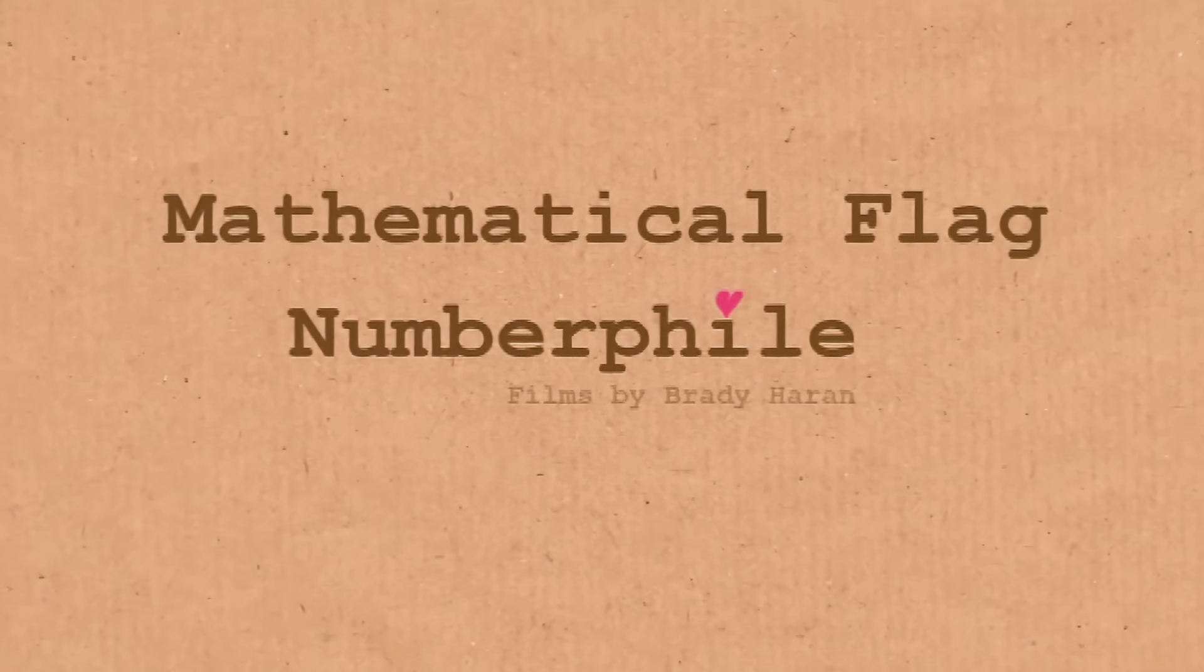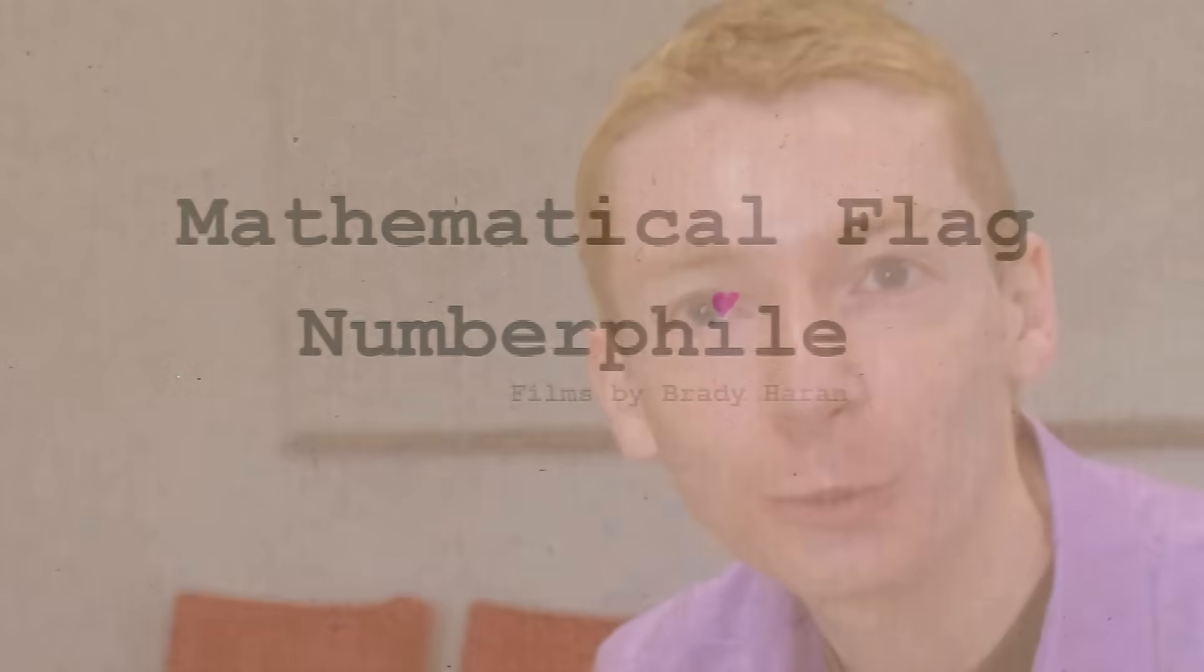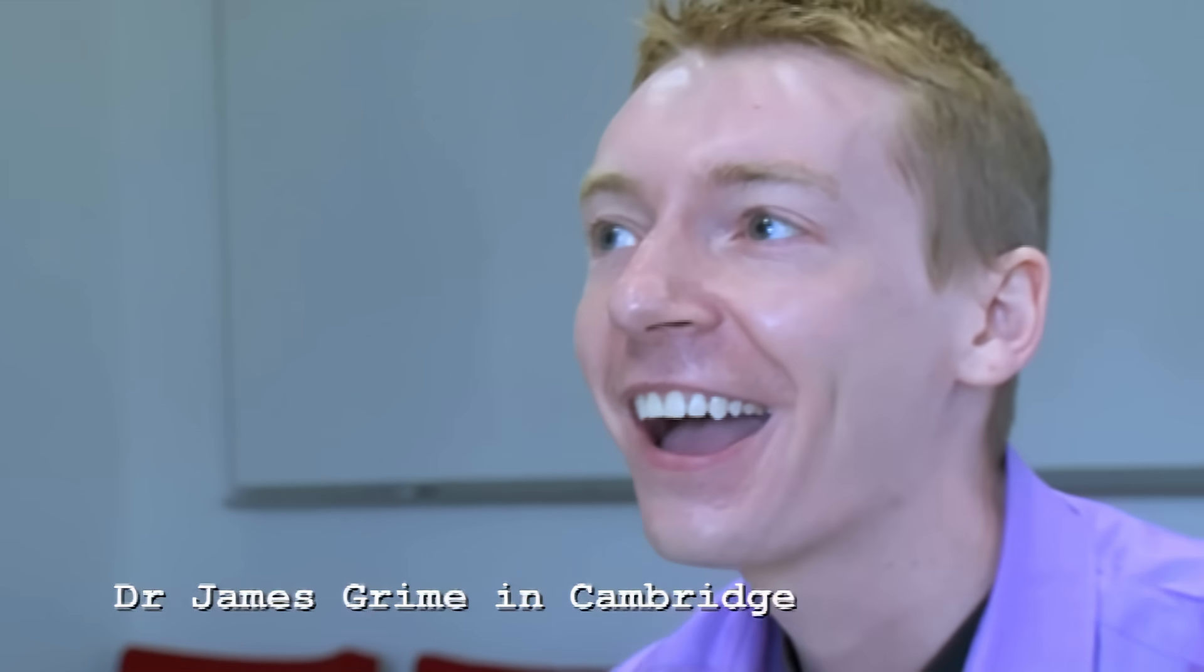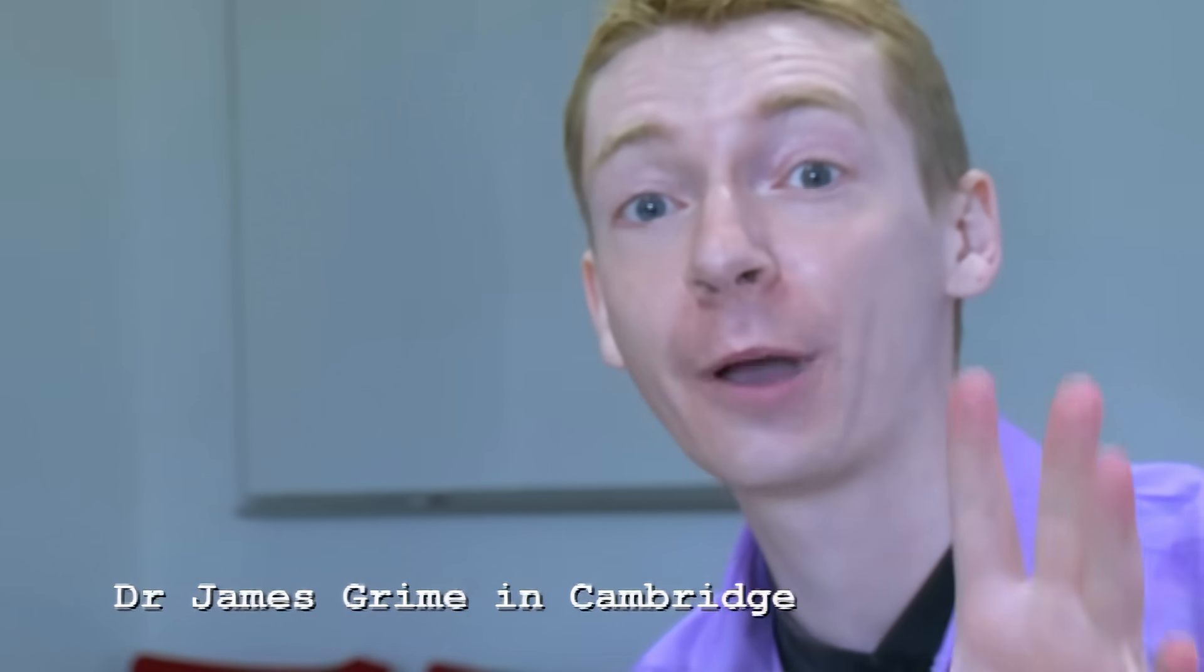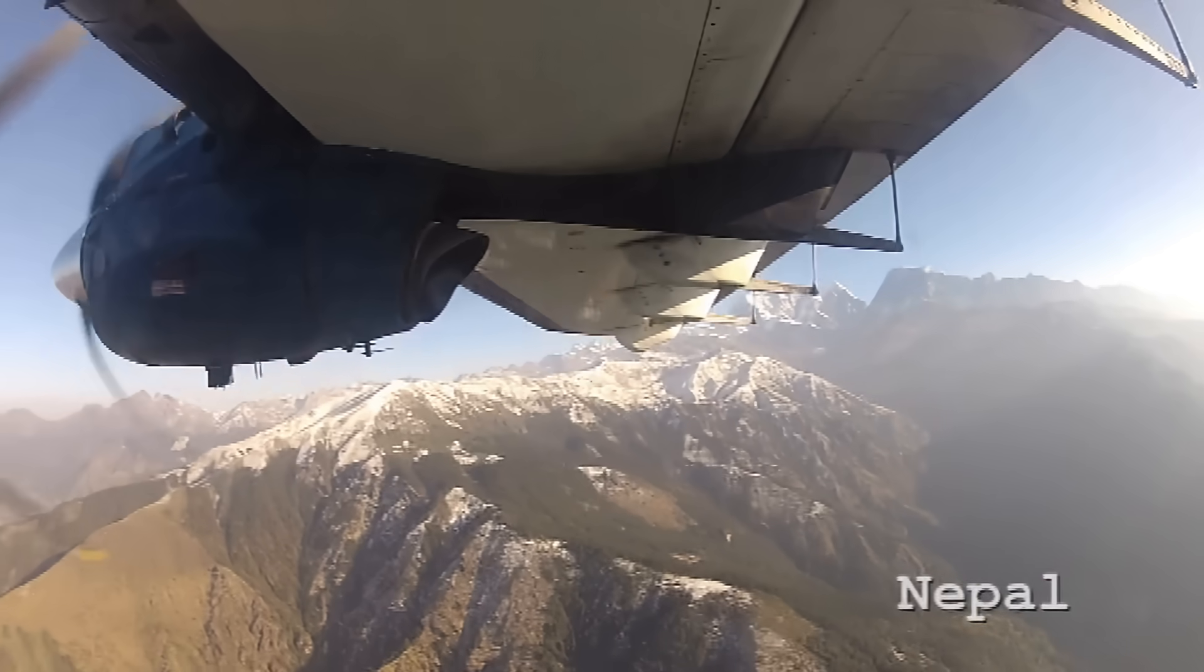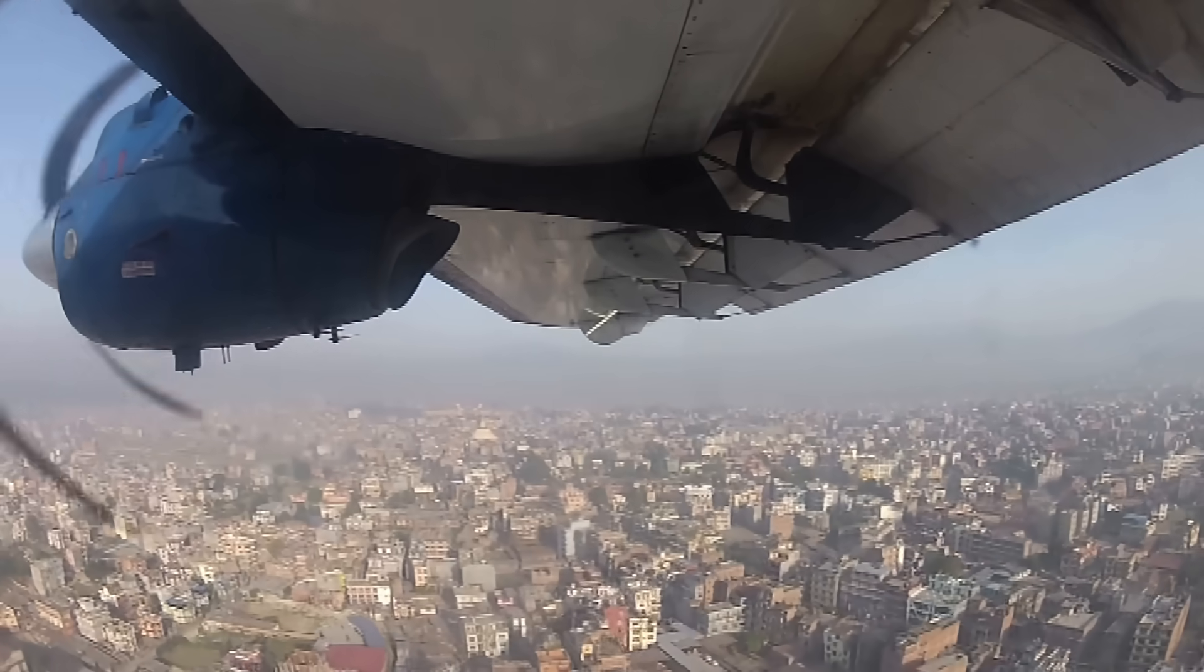We got chatting about countries and their flags and things, and I thought, what sort of maths could we do with that? We could look at the symmetry of flags and which has the most symmetrical flag. Then I thought, no, I know what the most mathematical flag is. And this is amazing. So Nepal, I reckon, has the most mathematical flag, the country of Nepal, because the mathematical construction for the flag is actually written into their constitution.